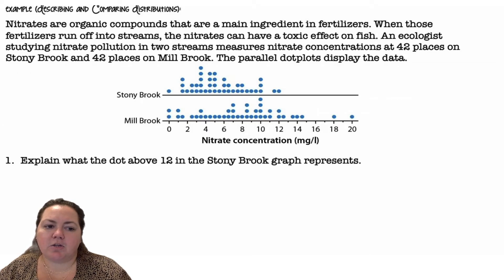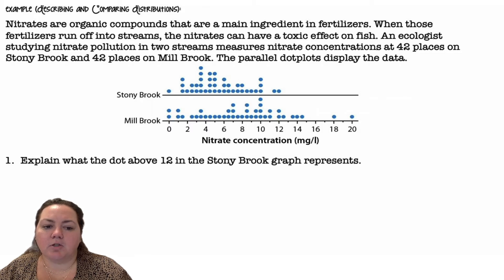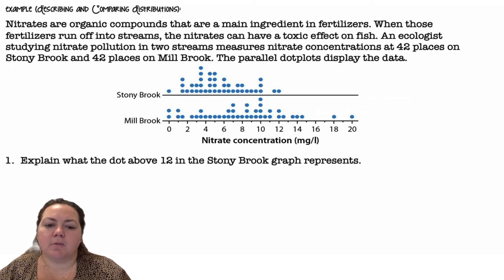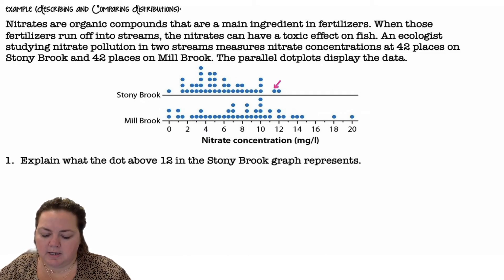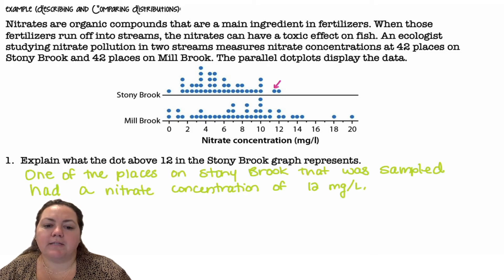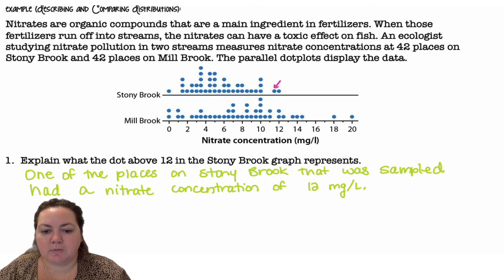Describing and comparing distributions: nitrates are organic compounds that are a main ingredient in fertilizers. When those fertilizers run off into streams, the nitrates can have a toxic effect on fish. An ecologist studying nitrate pollution in two streams measures nitrate concentration at 42 places on Stony Brook and 42 places on Millbrook. The parallel dot plots display the data using the same number line and scale, so you can compare them. One of the places on Stony Brook that was sampled had a nitrate concentration of 12 milligrams per liter — that's what that dot represents.